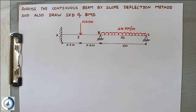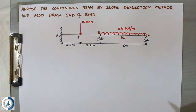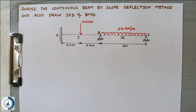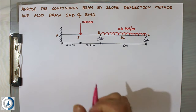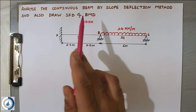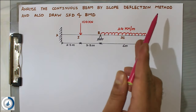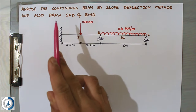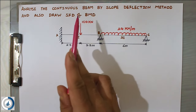Hello friends, welcome back to All About Structural Analysis and Design. This series is about analysis of indeterminate structures, and we are going through the slope deflection method. We have already solved one problem where both ends were fixed. This problem has a little variation — one end is fixed and another is hinged. The question is to analyze a continuous beam by the slope deflection method and draw the shear force diagram and bending moment diagram.